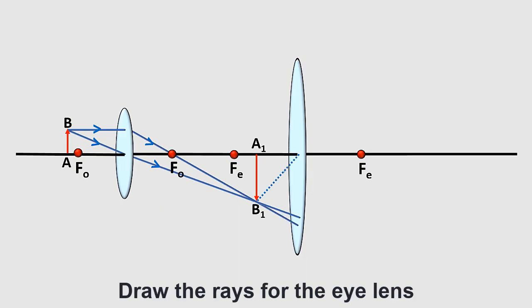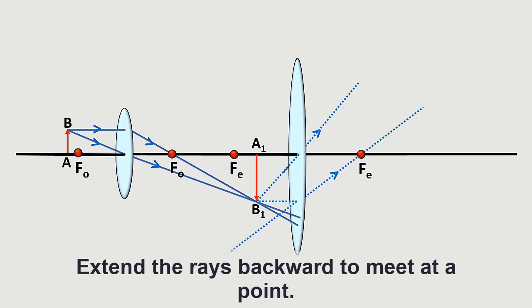Draw the rays for the eye lens. Extend the rays backward to meet at a point.